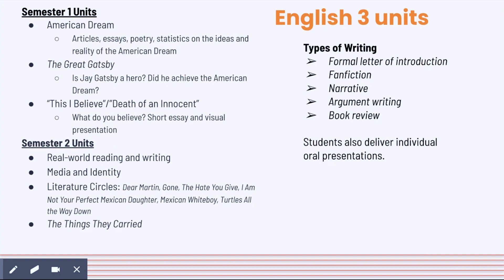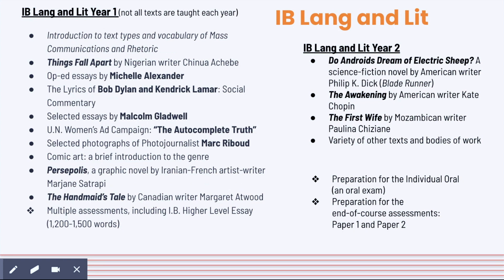Some English 3 units include a literature circles unit where students choose one of the listed texts and read in small groups — like book clubs within the classroom — plus various writing assignments and a real-world reading and writing unit in junior year. In IB Lang and Lit Year 1 and Year 2, texts are always changing but there are IB requirements for texts from different eras, countries, and continents. We cover African writers, a Canadian writer, an Iranian-French writer, a French photojournalist, American writers, different genres, and different time periods.